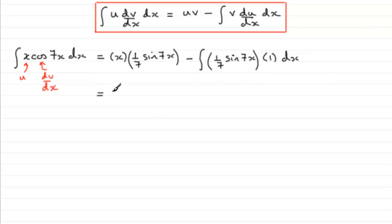So, next stage would be just to tidy this up. If we tidy up this first term, we've got x times 1/7 which I'm going to write as x over 7, and then we've got sine 7x.